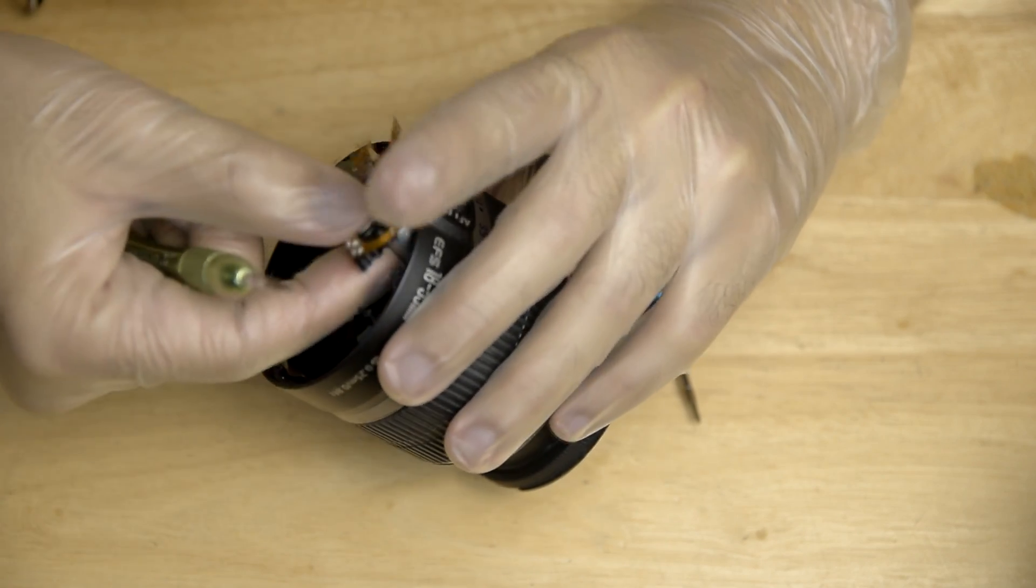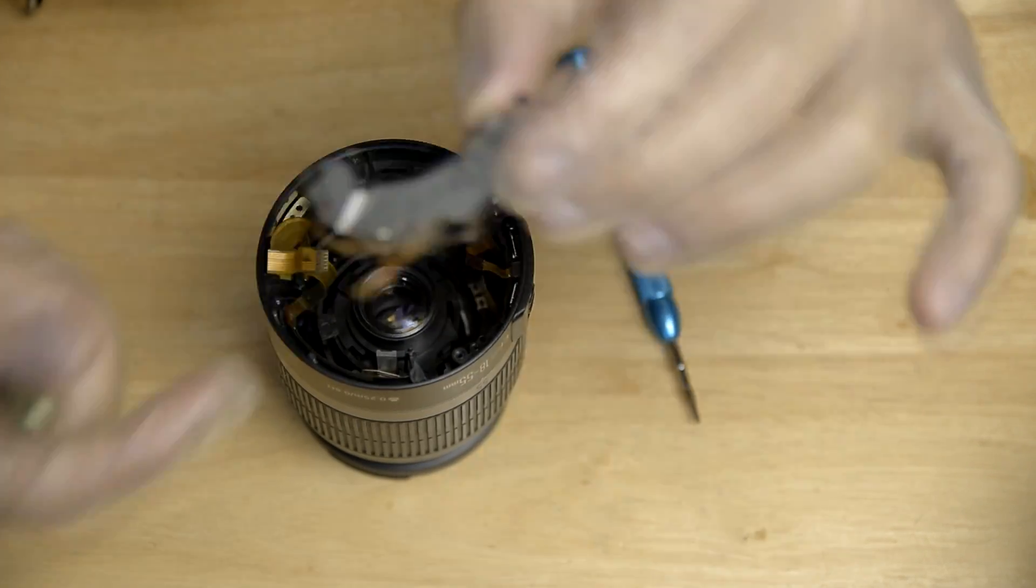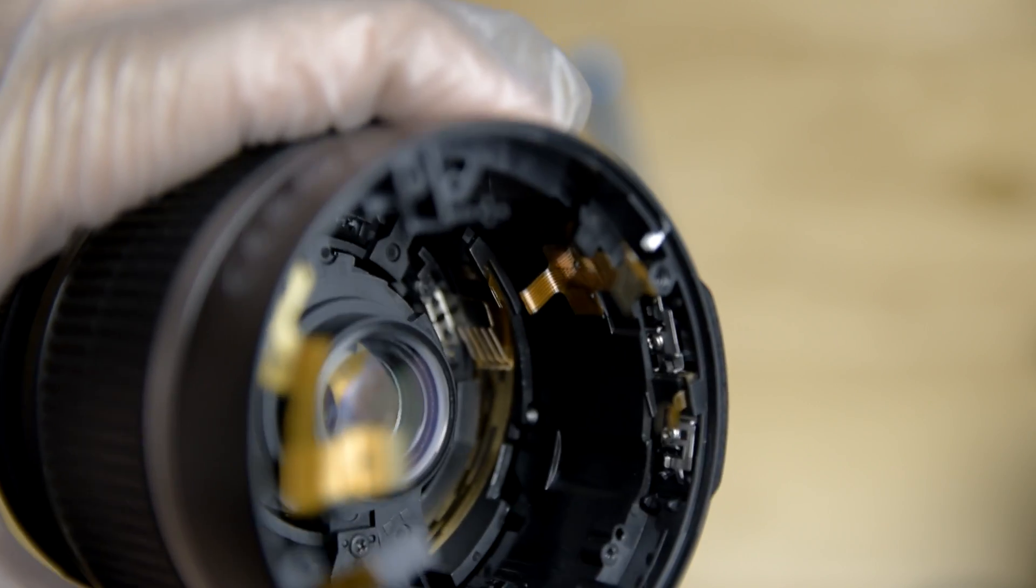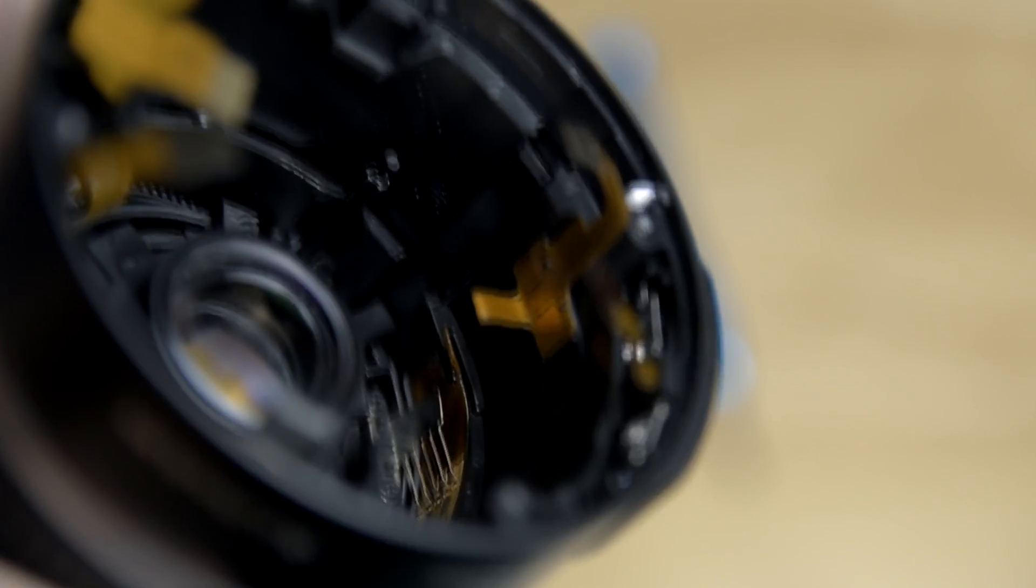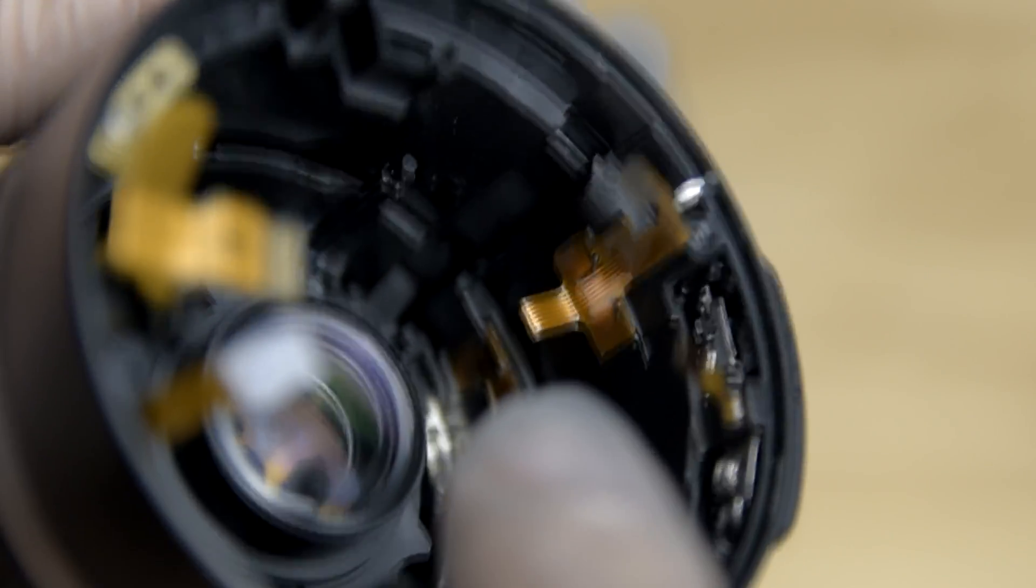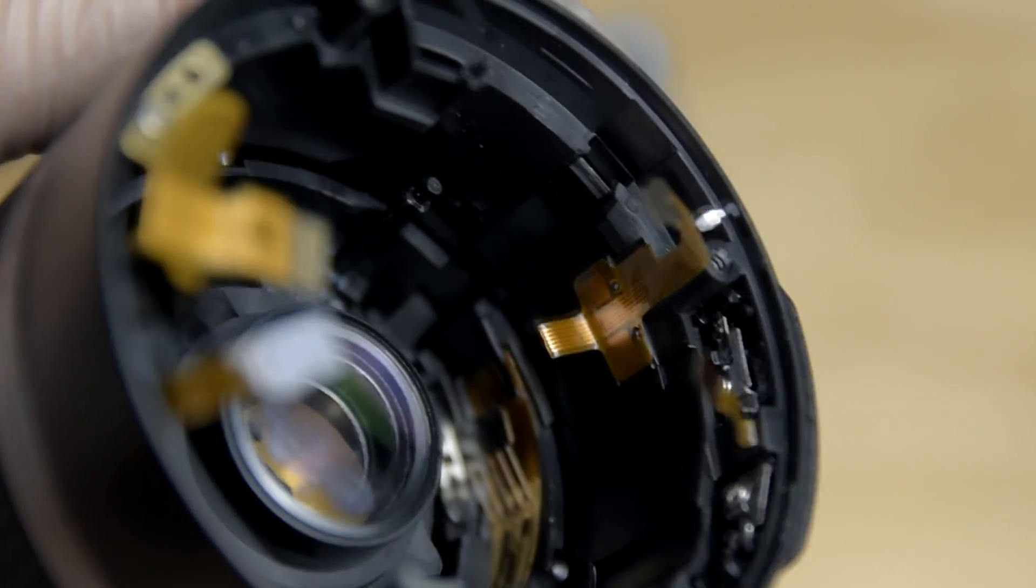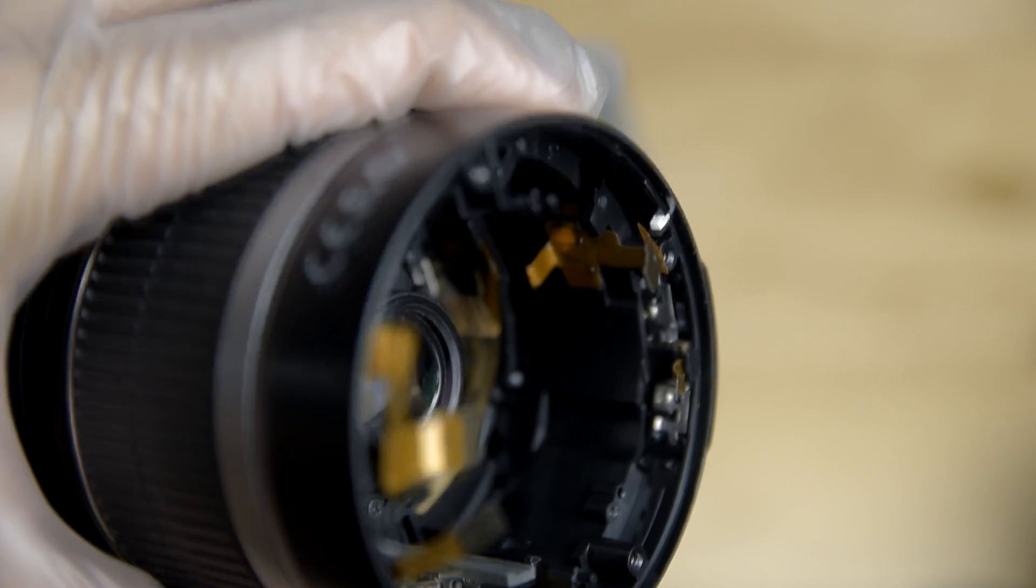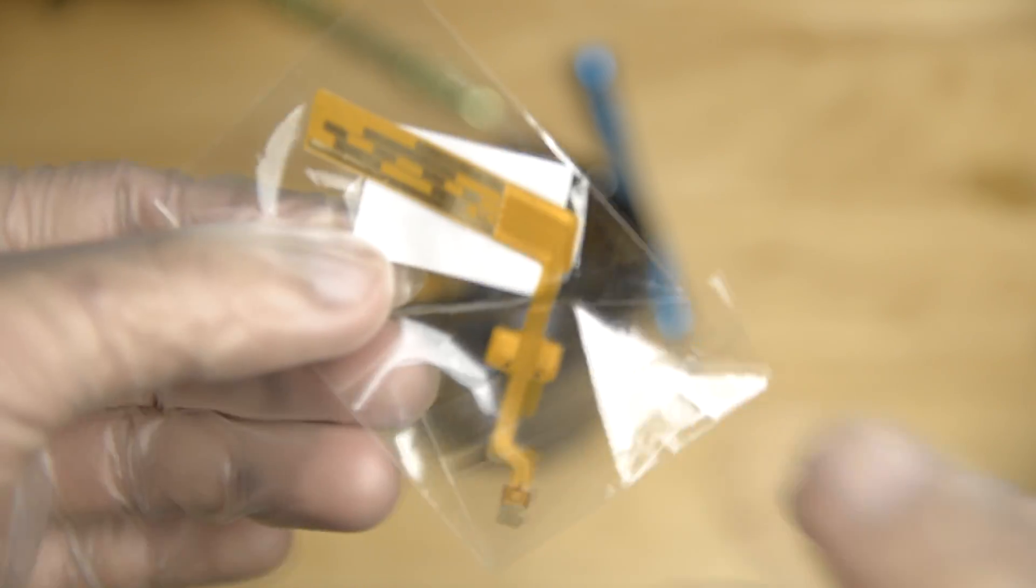After you remove the autofocus module, you can now see the flex cable. As you can see here, it's so clear that the autofocus flex cable is broken. Because of that, we will replace it with the new one.